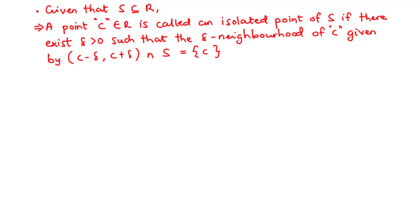Now let's move on to isolated points. Given that S is a subset of R, a point C, which is also a member of R, is called an isolated point of S if there exists delta greater than 0 such that the delta neighborhood of C, given by the open interval (C minus delta, C plus delta), intersection S, is equal to the single element C.